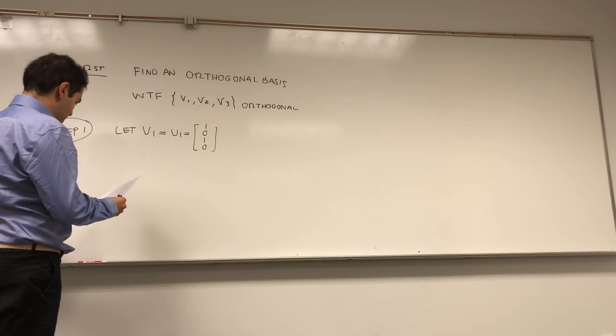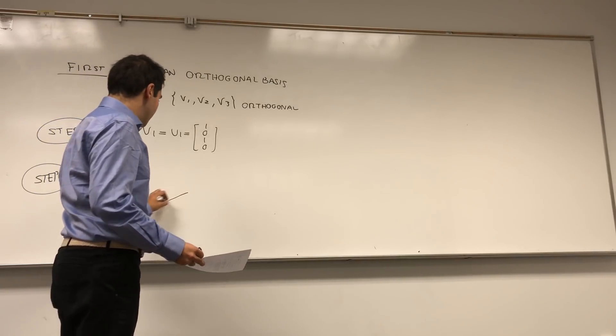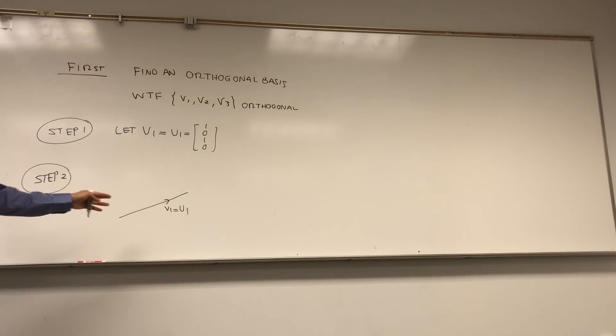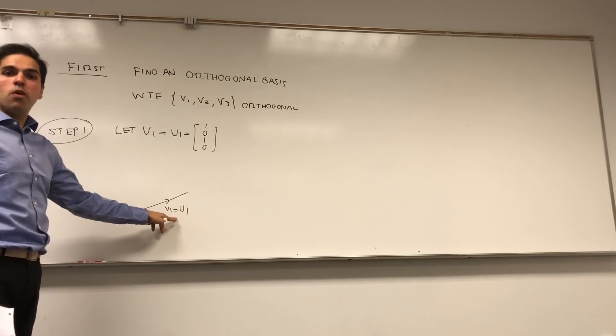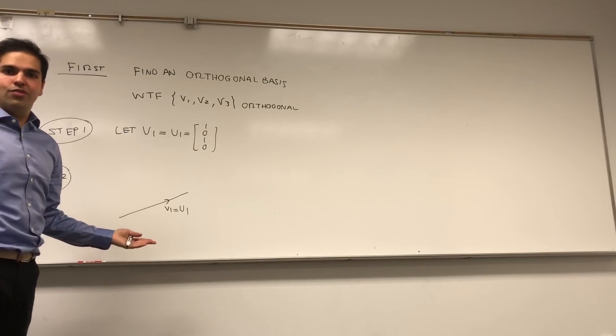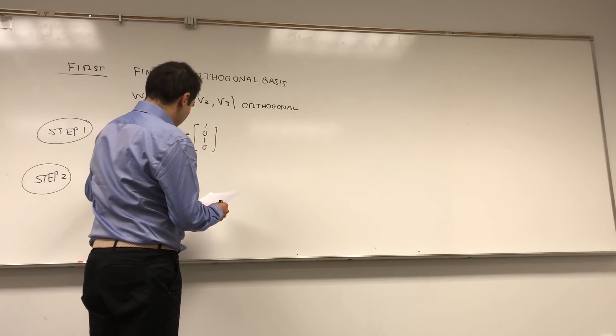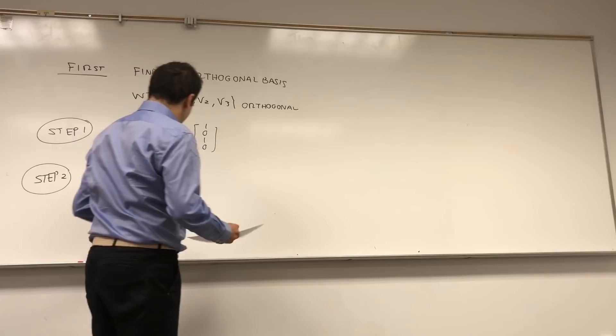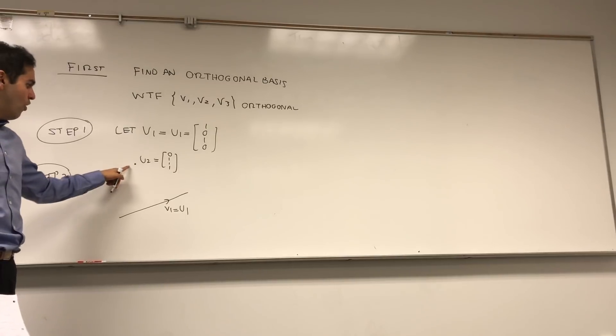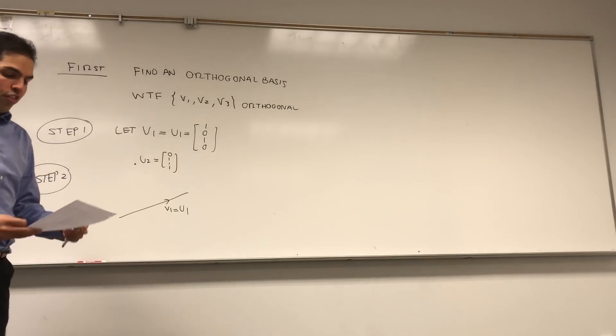And of course, just cross U1 out from your list because you will never use it again. Because from now on, we work with V1. And what's the second step? So here, as I said, we start with V1 equals U1. And we want to find some vector that's perpendicular to V1. Well, let's see what other vectors we have. We do have the vector U2, which is 0, 1, 1, 1.